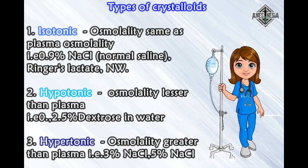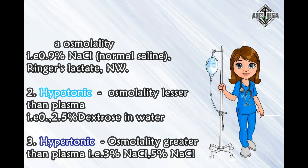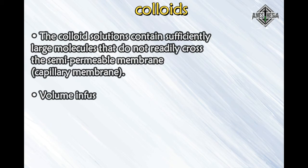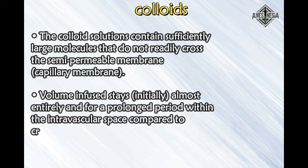Types of crystalloids: Isotonic — osmolality same as plasma osmolality — includes 0.9% NaCl (normal saline) and Ringer's lactate. Hypotonic — osmolality less than plasma — includes 2.5% dextrose in water. Hypertonic — osmolality greater than plasma — includes 3% NaCl and 5% NaCl.